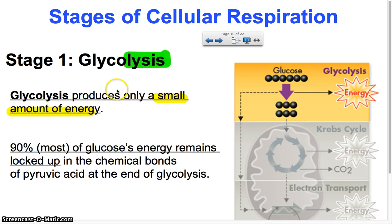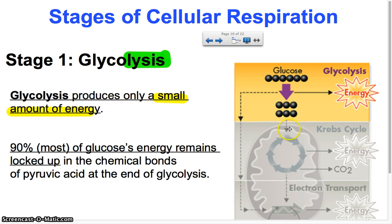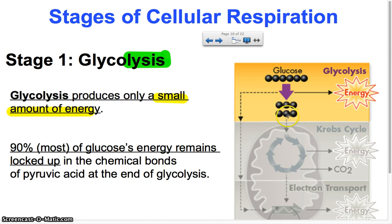Let's take a look at the first step: glycolysis. Using our knowledge of root words, we can break this down. 'Lysis' means to break apart, and 'glyco' refers to glucose — so glycolysis means breaking apart glucose, which is exactly what it does. Glucose is represented here with six black spheres, each representing a carbon, since glucose has six carbons. Glycolysis breaks glucose in half, releasing energy from those bonds, and forms two pyruvate molecules, each with three carbons. But this only produces a small amount of energy — the rest is made later in cellular respiration.